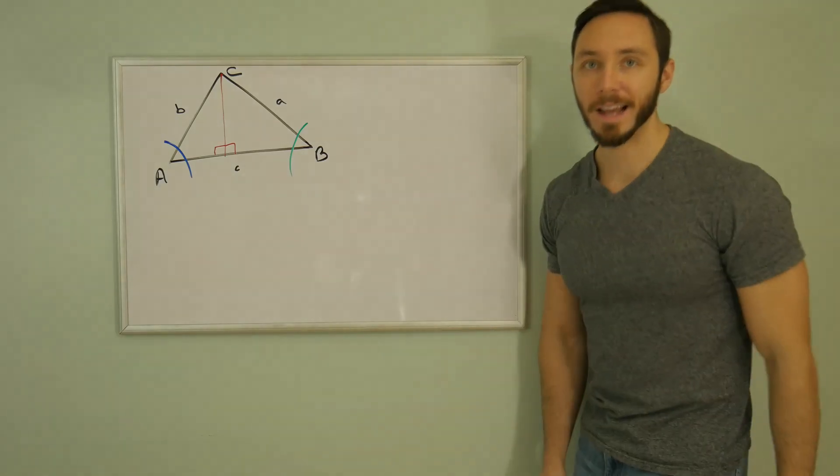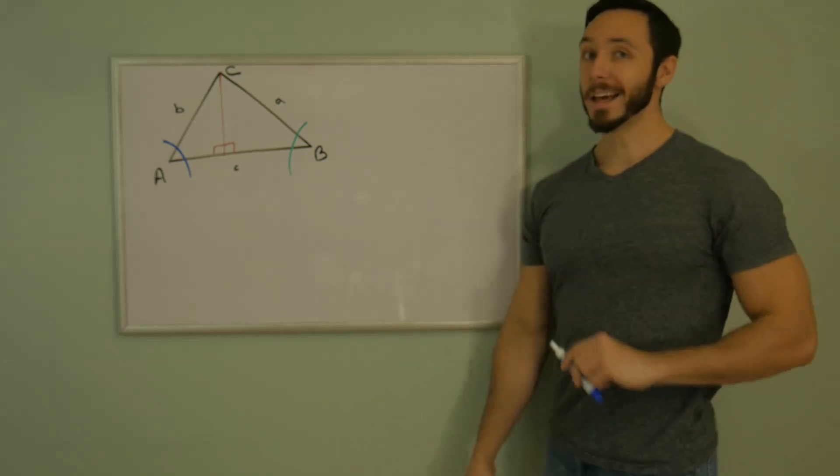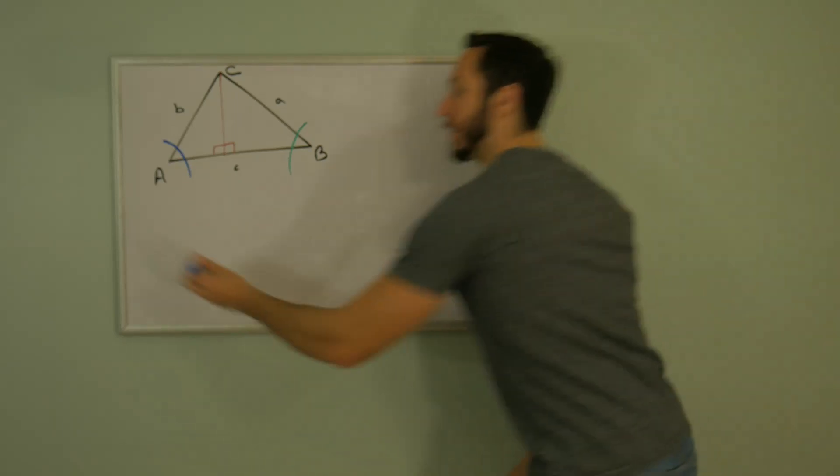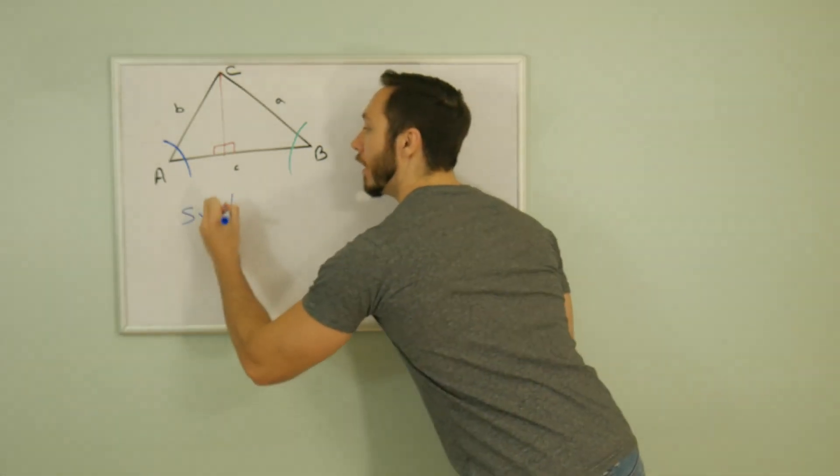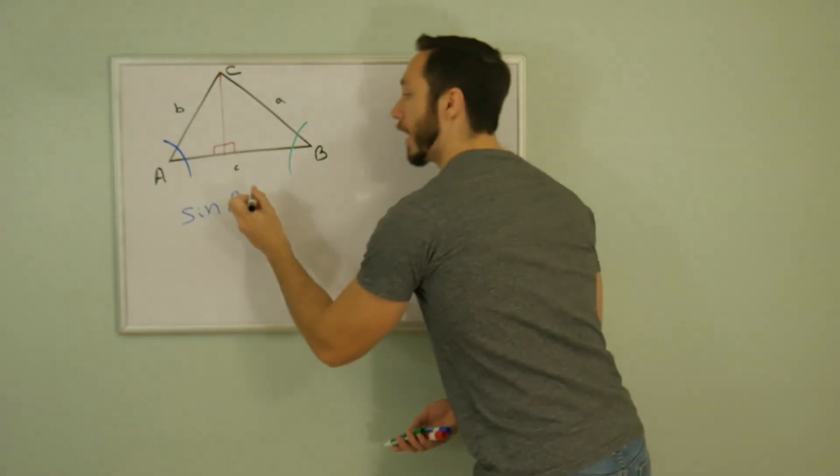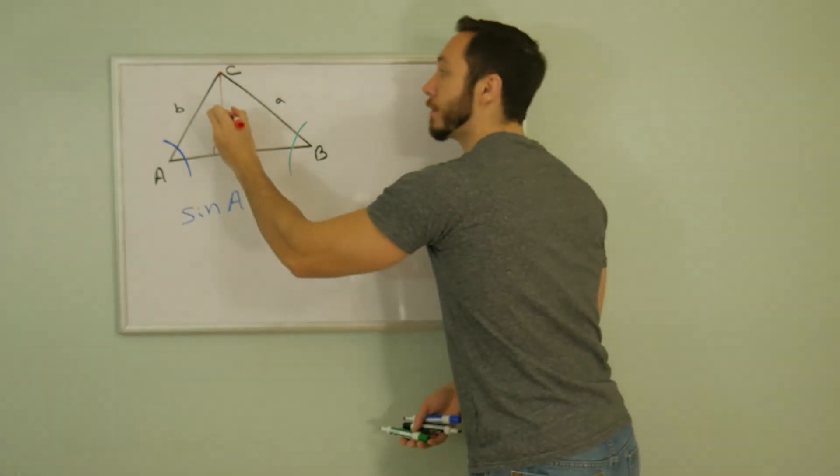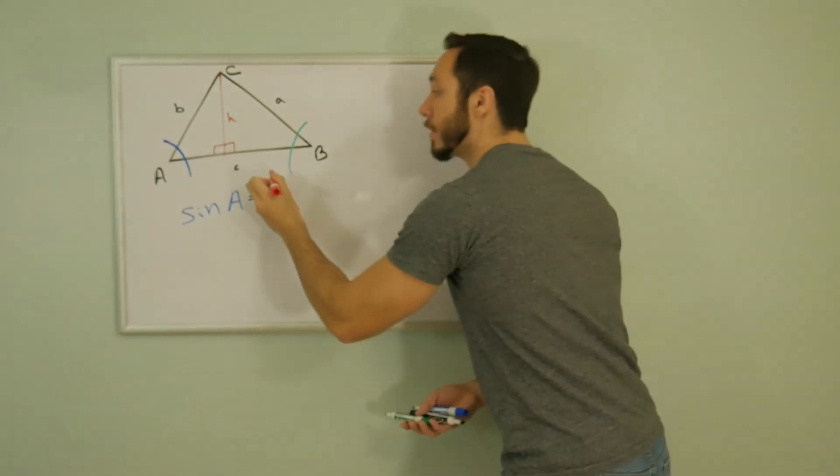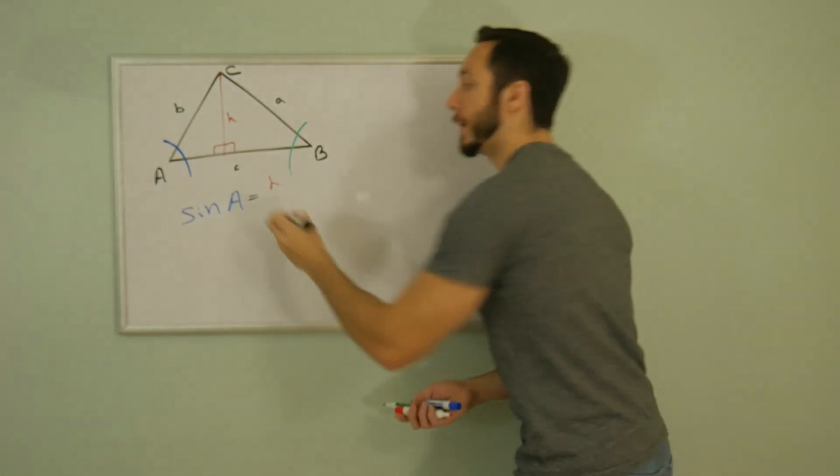And would you look at that? I got me some right triangles. I like that angle A. Let's use it. The sine ratio of A is equal to that opposite over hypotenuse. Let's just call it H. So we have H over B.